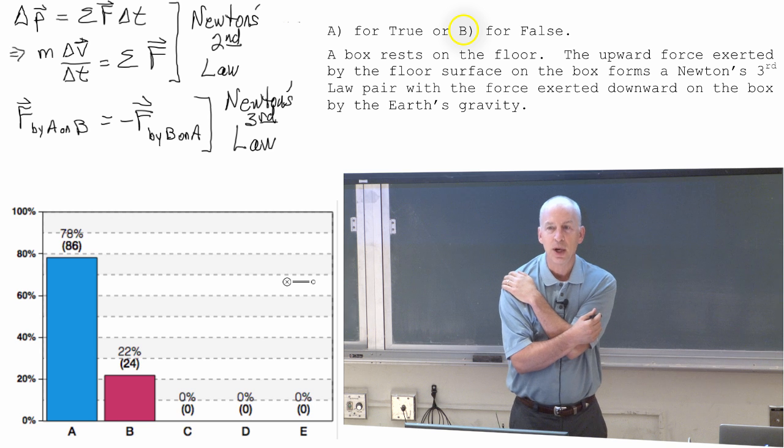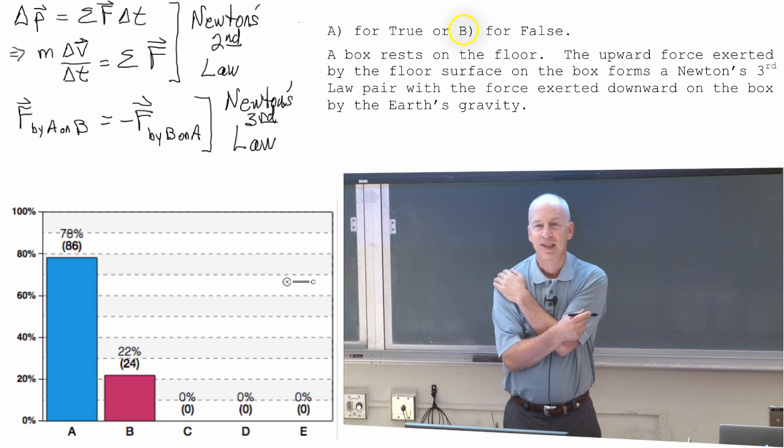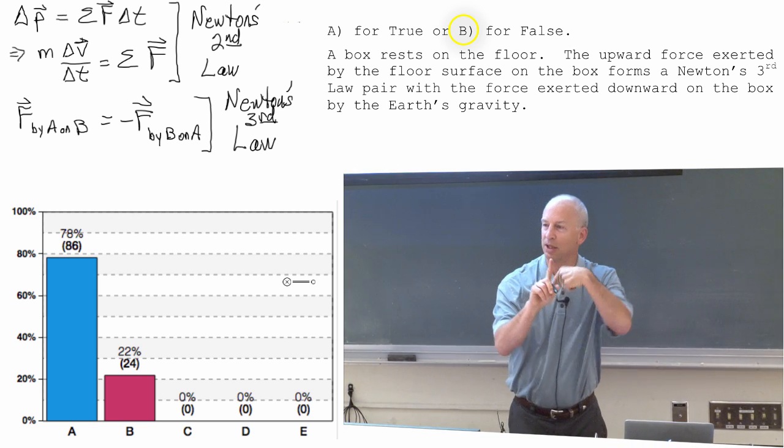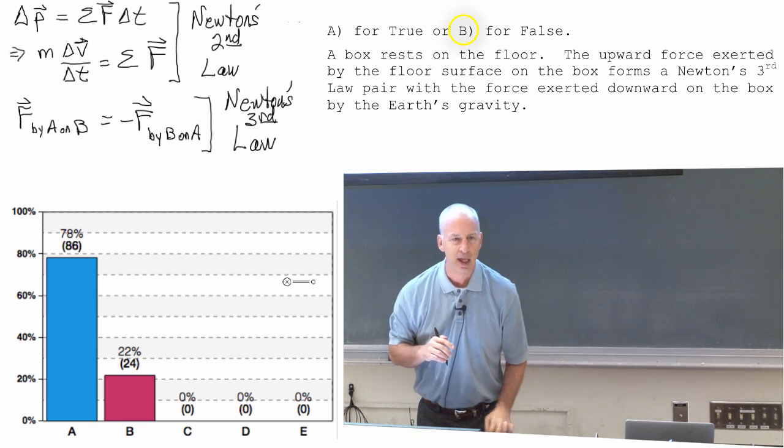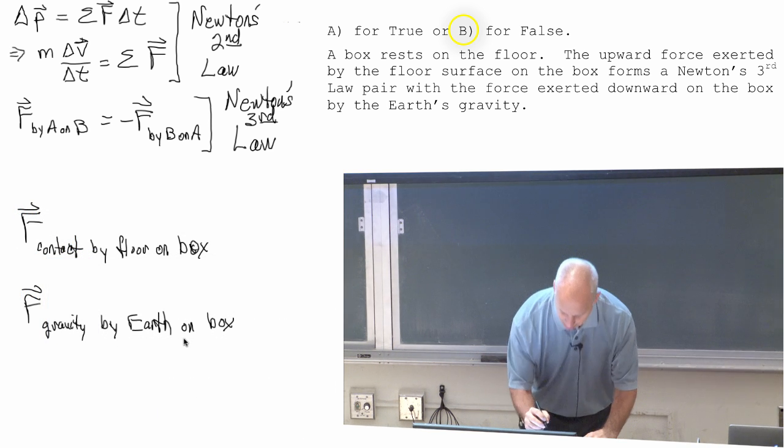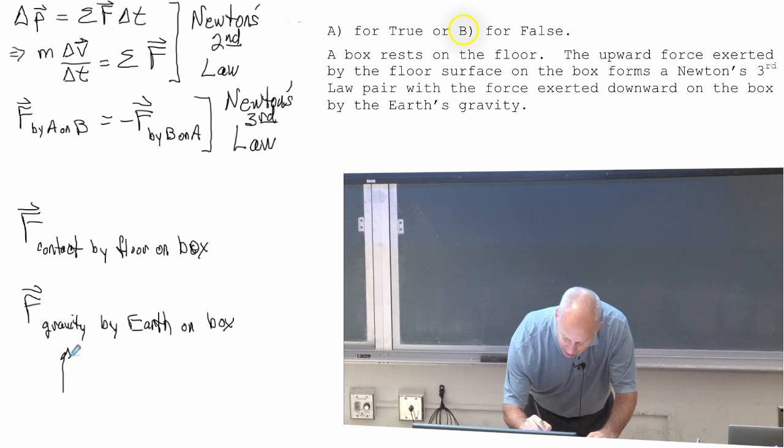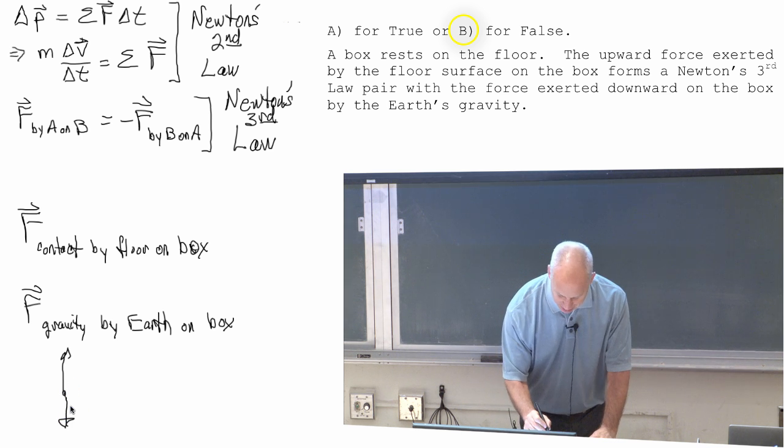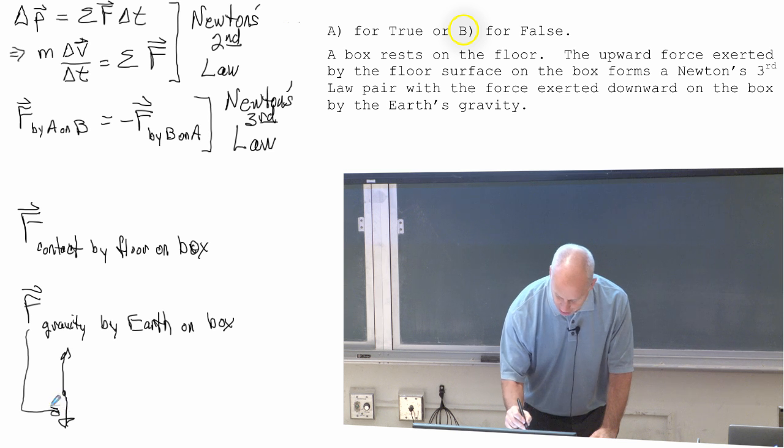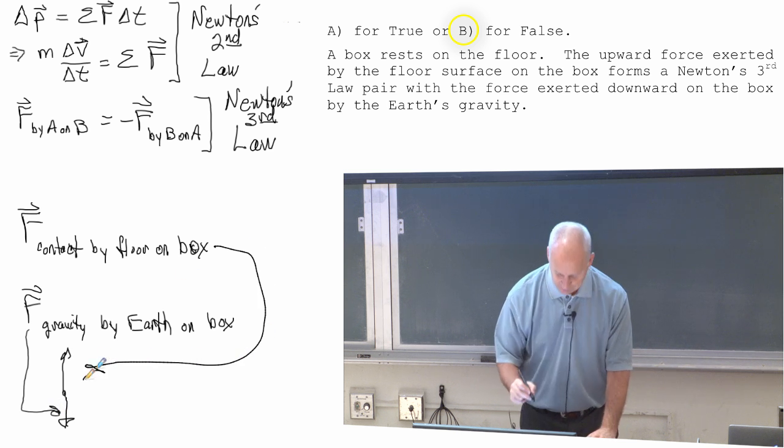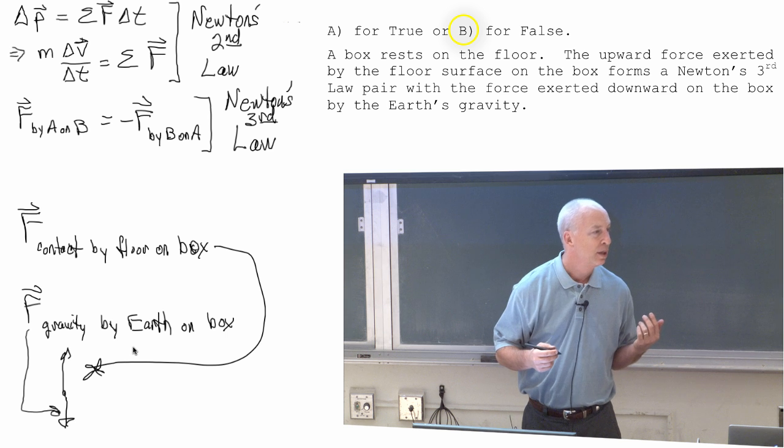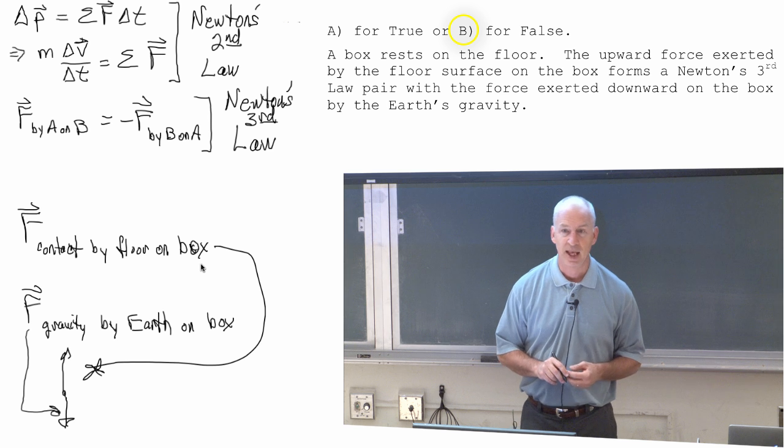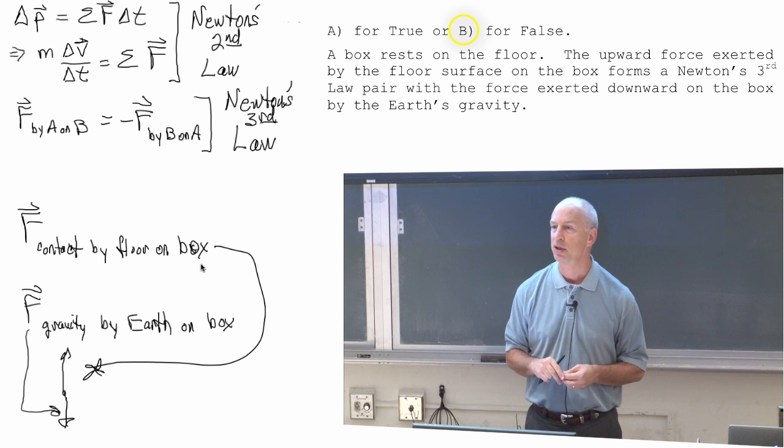Even though the vast majority of you picked true, this is not what Newton's third law tells you. It may be true that the force upward is equal to the force downward, do we have a law for that? If the force downward by the Earth was equal to the force upward by the floor, those two forces would cancel, those are both forces on the box. They both belong on the force diagram for the box.